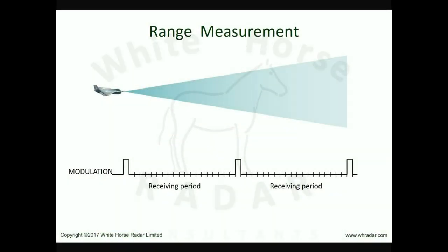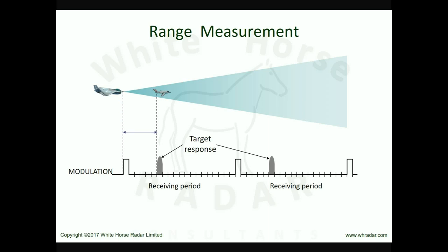Here we see the radar beam and the modulation envelope cycling between transmission and reception. If we introduce a target into the beam, we see its response in the appropriate range gate of the receiving period. Because the modulation is periodic, we also see the target response in the equivalent range gate of the next receiving period. The target response would be periodic, appearing in the same range gate in all receiving periods for as long as the target remains in the beam at its particular range. The time delay between the transmitted pulse and the reception of the target response is time T, and the same delay T is repeated in each receiving period.